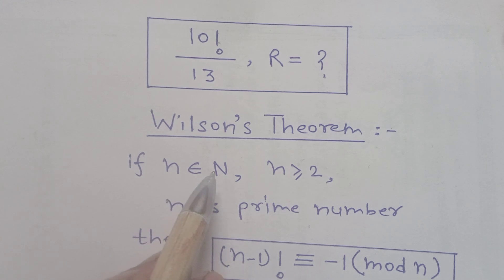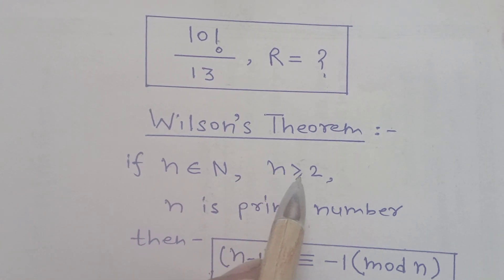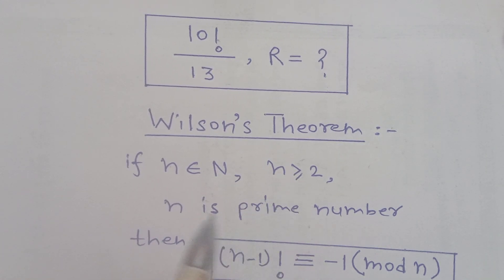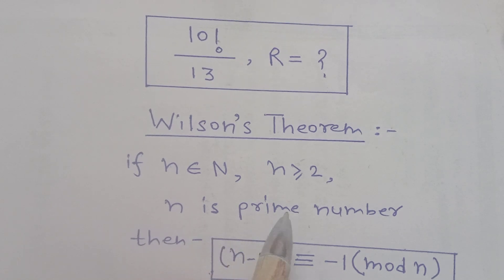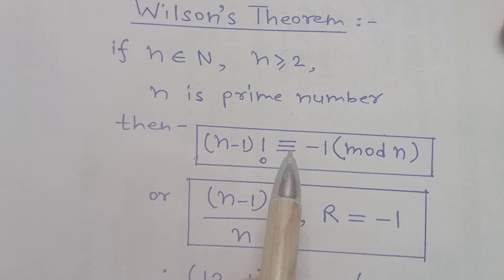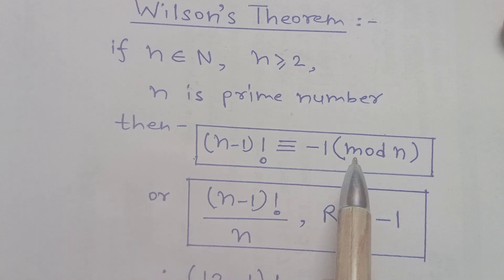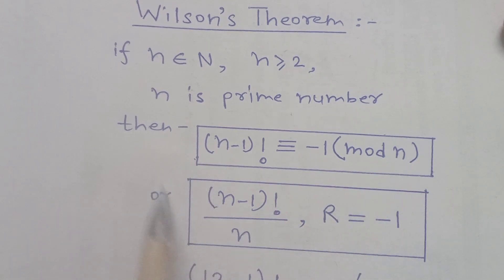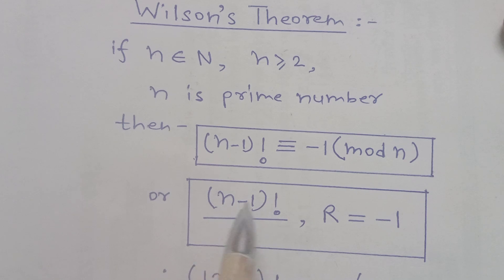What is Wilson's theorem? If n belongs to natural numbers and n is greater than or equal to 2, and also n is a prime number, then (n-1)! is congruent to -1 modulo n.